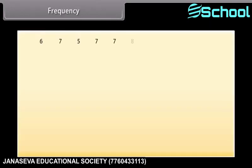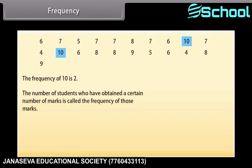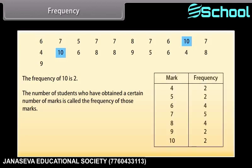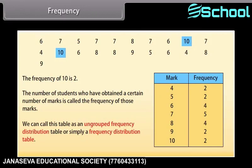These are the marks obtained by 20 students in subject science. The highest number scored here is 10, and we can see that two students have scored 10 marks, so the frequency of 10 is 2. The number of students who have obtained a certain number of marks is called the frequency of those marks. We can write this data in a table form — these are the marks and these are the frequencies. This table is called an ungrouped frequency distribution table, or simply a distribution table.